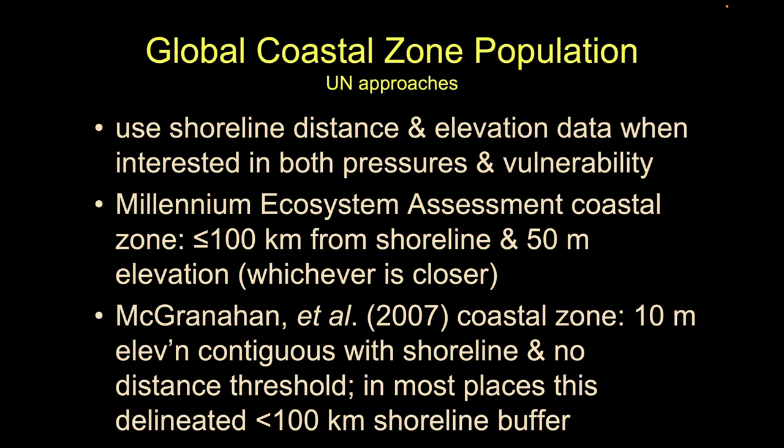So the risk changes depending on how we do that, and the definitions matter in terms of these things. The UN, which generates a lot of our global predictions for vulnerability and hazards, typically uses distance and elevational data when they want to talk about pressures and vulnerability for different countries or areas. The big change that came along in the UN was the Millennium Ecosystem Assessment from the early 2000s. They shifted and started to use the definition of less than 100 kilometers from the mean high or high water and less than 50 meters elevation.